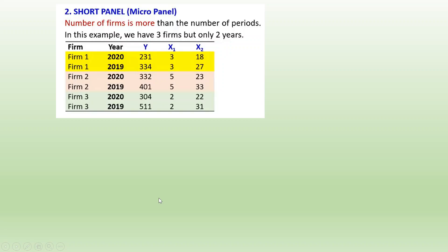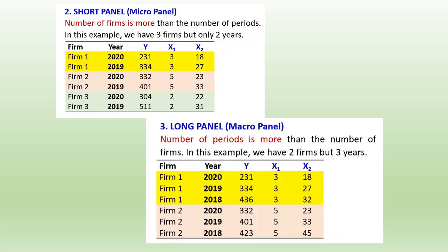In case of a short panel, also called a micro-panel, the number of firms is greater than the number of periods — for example, many firms but only two years. In case of a long panel, also known as a macro-panel, the number of periods is greater than the number of firms — for example, two firms but three years.